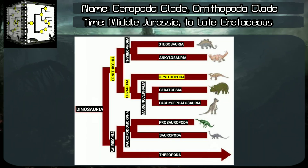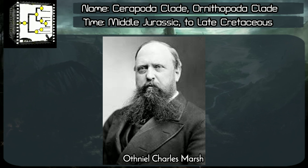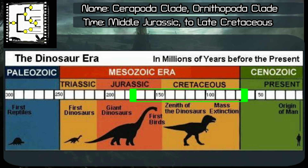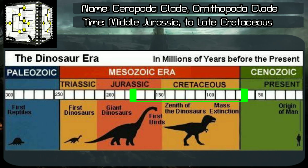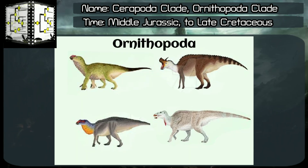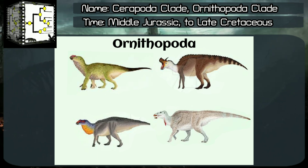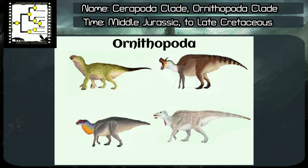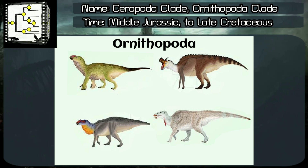Ornithopoda clade, classified by Othniel Charles Marsh, year 1881. Time range: Phanerozoic Aeon, Mesozoic Era, middle Jurassic to late Cretaceous periods, something around 165 to 66 million years ago. From Greek, Ornithopoda means bird feet. Ornithopods are small, fast-running herbivores. They have specialized teeth for grinding plant food. They don't have armor plating, thickened skulls, nor clubbed tails.